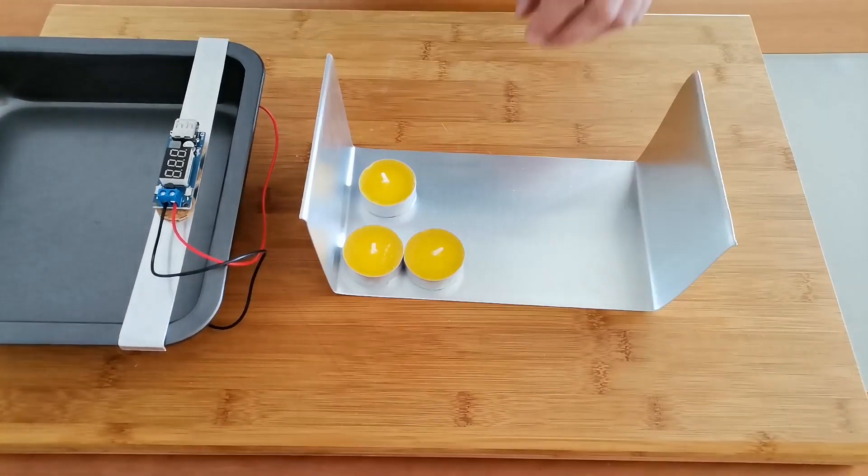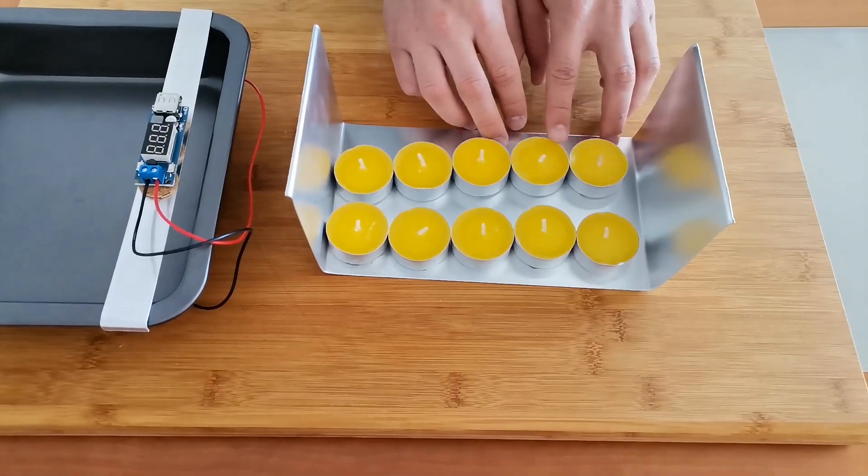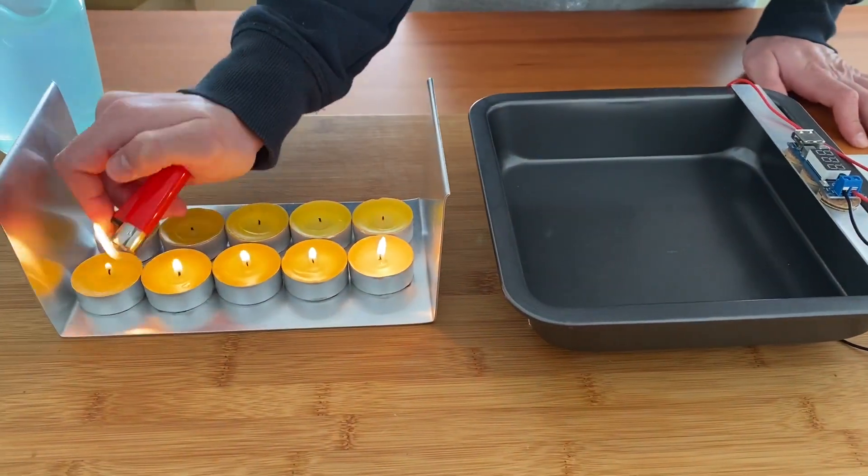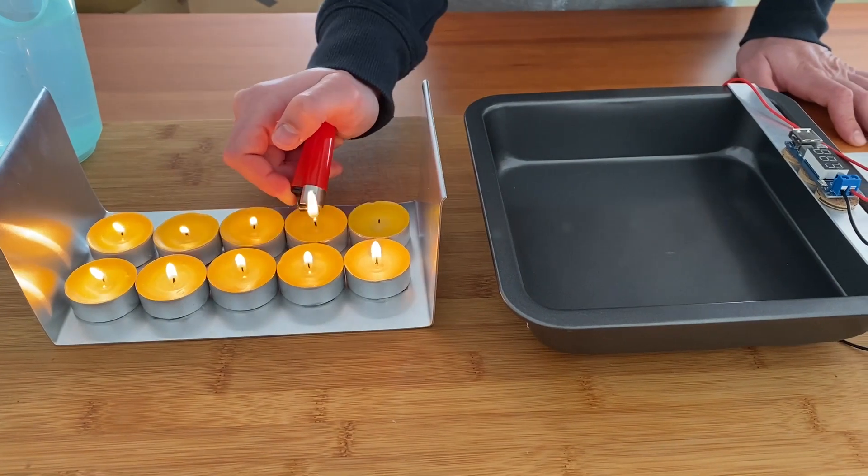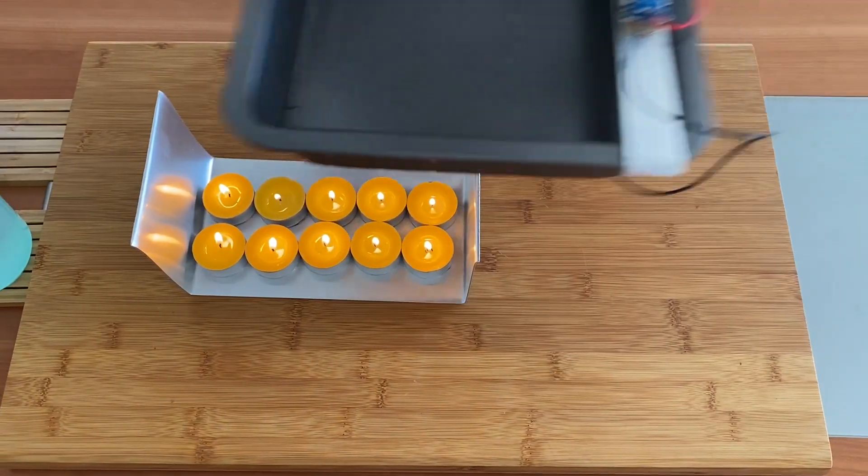Well, now it's the fun part. Start by placing as many candles as you can on the bottom. Then, light them up. Now, place the tray on top of the candles.